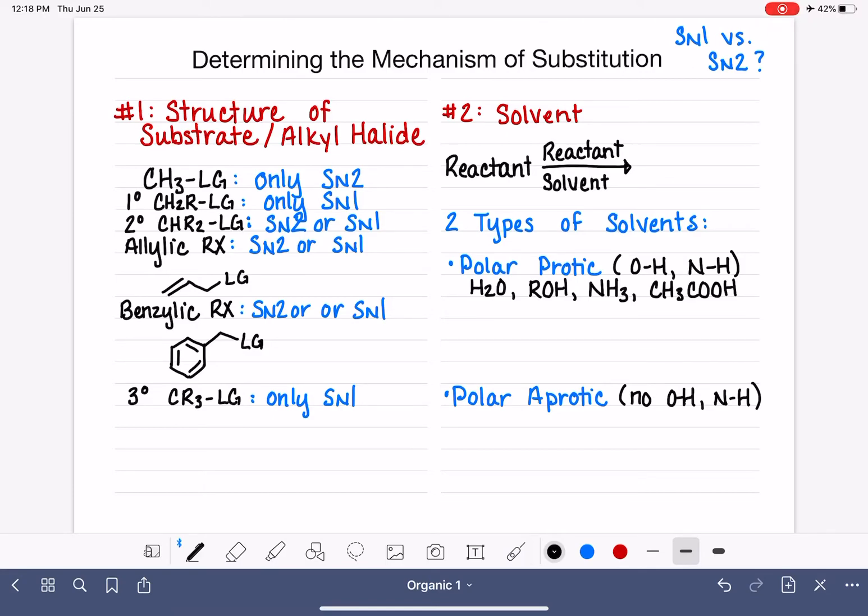Polar aprotic solvents have no OH or NH bonds. One example would be CH3CN, that's acetonitrile, has no OH or NH bonds. The other two that we commonly see are DMSO, dimethyl sulfoxide, and DMF, dimethyl formamide.